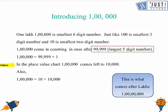In the place value chart, 1 lakh comes left to 10,000. Also, 1,00,000 equals 10 times 10,000. What do you think will be the next multiple of 1 lakh? It will be 2 lakhs, and how do you think you can write 2 lakhs? It could be written as 20 times 10,000.